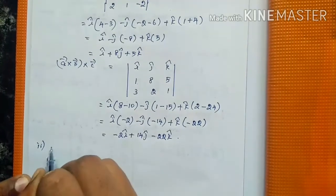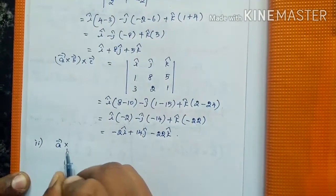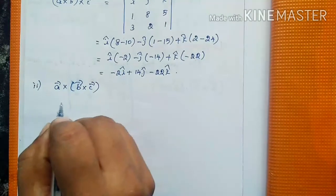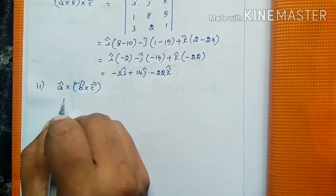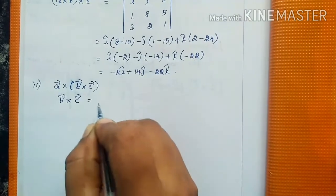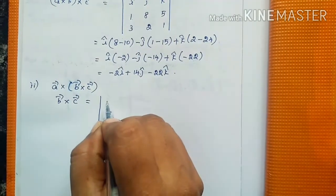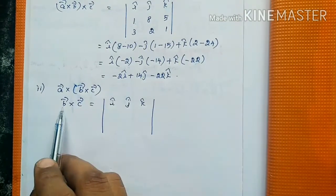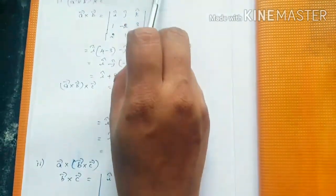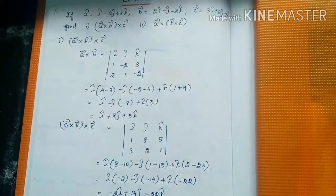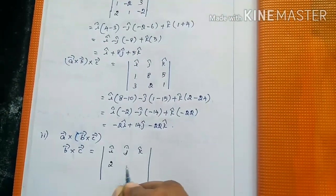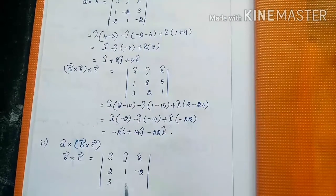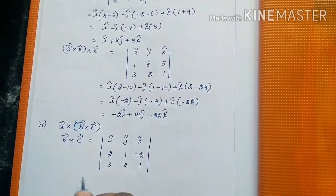Now we will see the second subdivision: A×(B×C). First we find the term inside the bracket, B×C. Using the determinant form with first row î, ĵ, k̂; B components 2, 1, -2; and C components 3, 2, 1. Expanding: î into (1 + 4), minus ĵ into (2 + 6), plus k̂ into (4 - 3).